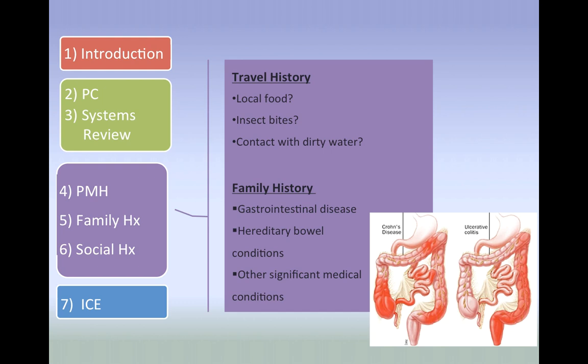Moving on to family history: ask about any general conditions that might run in the family, such as cancer and hypertension. Then ask GI-specific questions about IBS, IBD, and colon cancer — especially those associated with FAP and HNPCC.